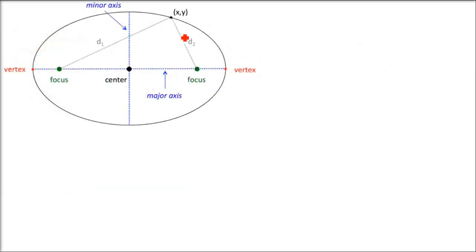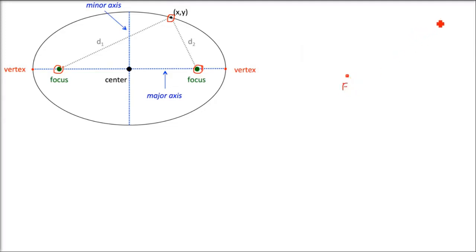For an ellipse, there will be two foci. When we talked about parabola earlier, it has only one focus — ellipse has two foci. The definition of an ellipse: it is a locus of a point on a plane which moves such that the ratio of its distance from a fixed point and its distance from a fixed straight line called the directrix is always constant and always less than unity.